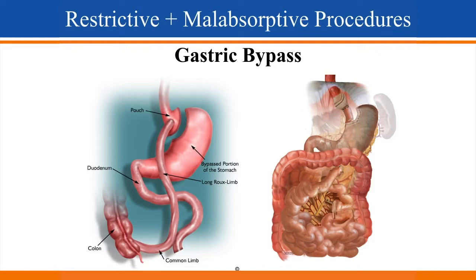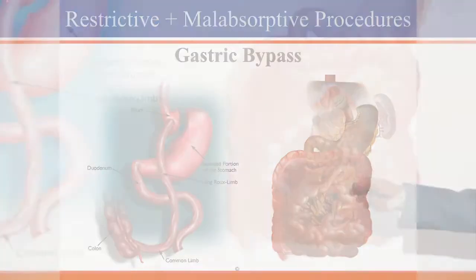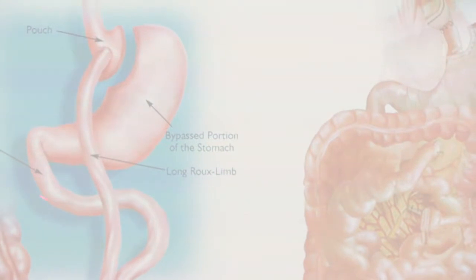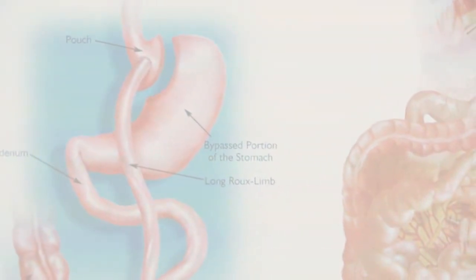Gastric bypass is another commonly done surgery, where we divide the stomach to create two portions — one small pouch of around 4 to 5 ounces, and the remaining stomach. We also reroute the intestine — cut the intestine and join it here, so when the patient eats, first they eat a small portion, and second, it bypasses the initial portion of the small intestine — the duodenum — so the body does not absorb all the calories.